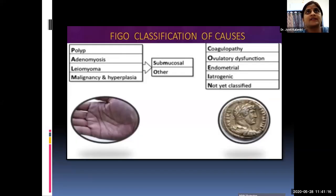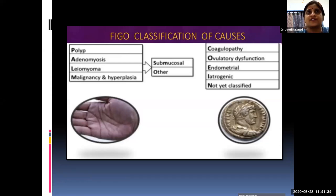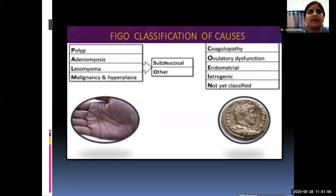The FIGO classification of abnormal uterine bleeding introduced around 2011–12 uses the PALM-COEIN system. PALM covers structural causes: Polyp, Adenomyosis, Leiomyoma, and Malignancy/hyperplasia — diagnosed by structural changes on biopsy and histopathology. COEIN covers non-structural causes diagnosed by hormonal and blood investigations: Coagulopathy, Ovulatory dysfunction, Endometrial disorders, Iatrogenic causes, and Not yet classified.